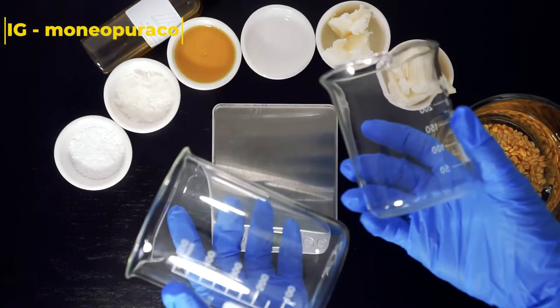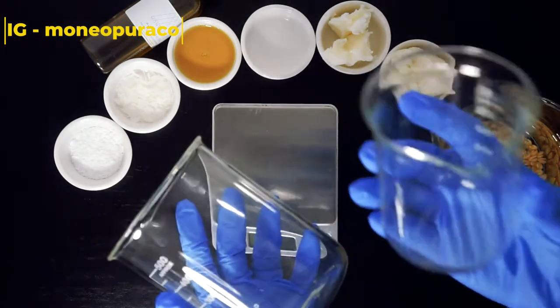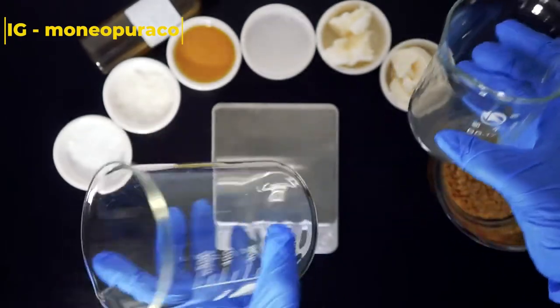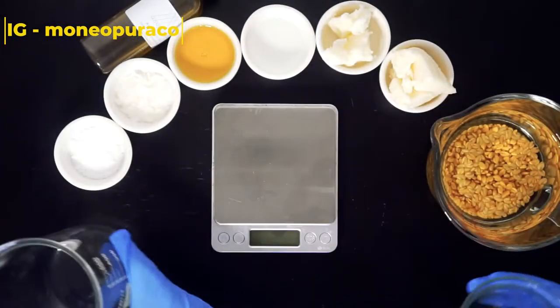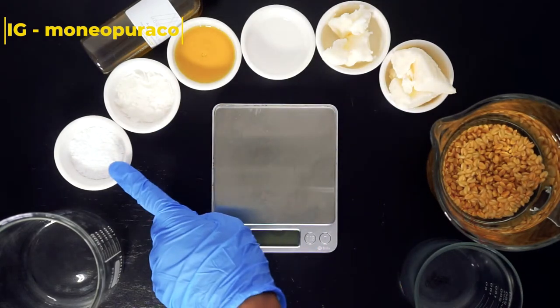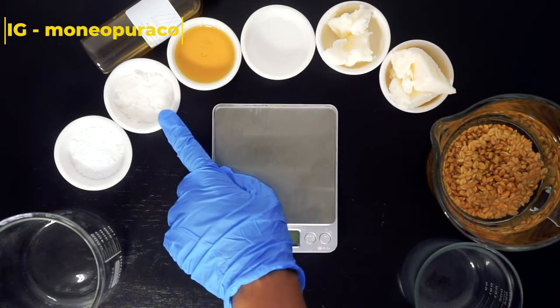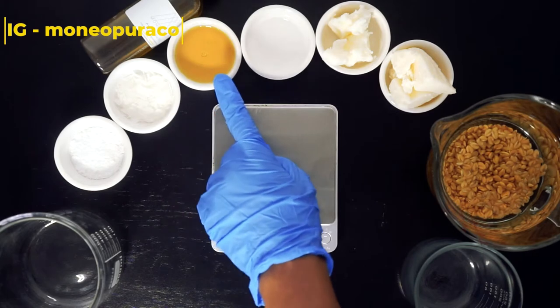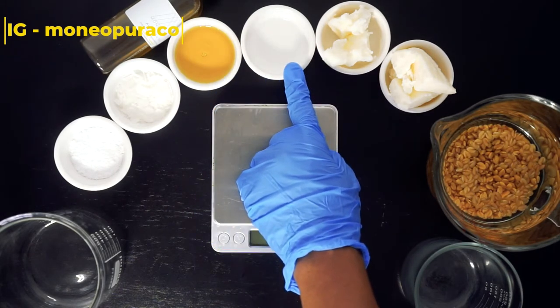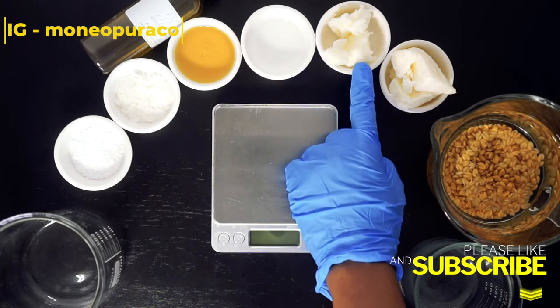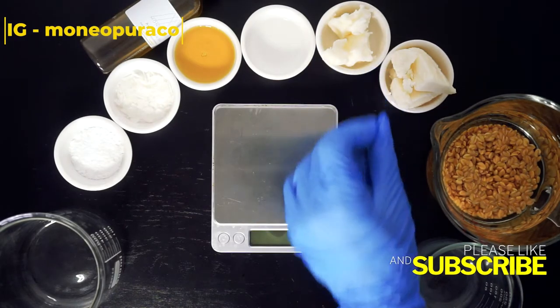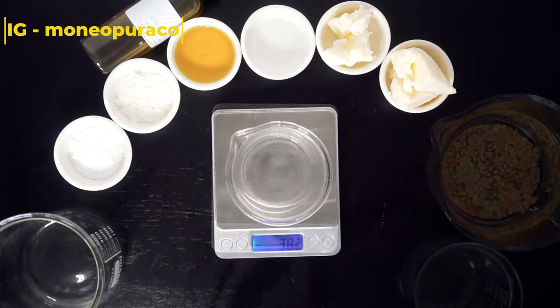Just make sure that you make your fenugreek seed liquid before you start this process. You're going to need a digital scale to measure out your ingredients. This is really important because we're going to be adding a preservative to our leave-in conditioner, so all our ingredients have to add up to 100 percent. You'll need a digital scale and two glass beakers for your water phase and oil phase.